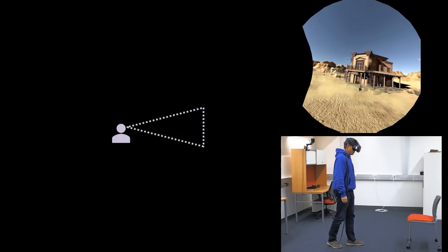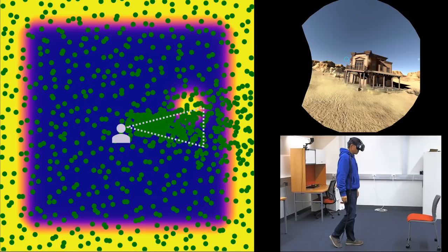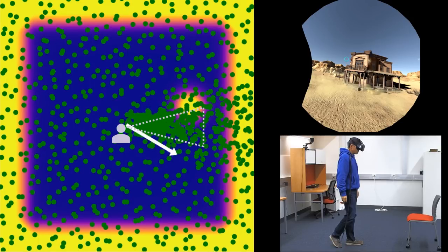Since saccade tends to be frequent but unpredictable, we propose a dynamic local mapping instead of a static global mapping between the virtual and real environments.